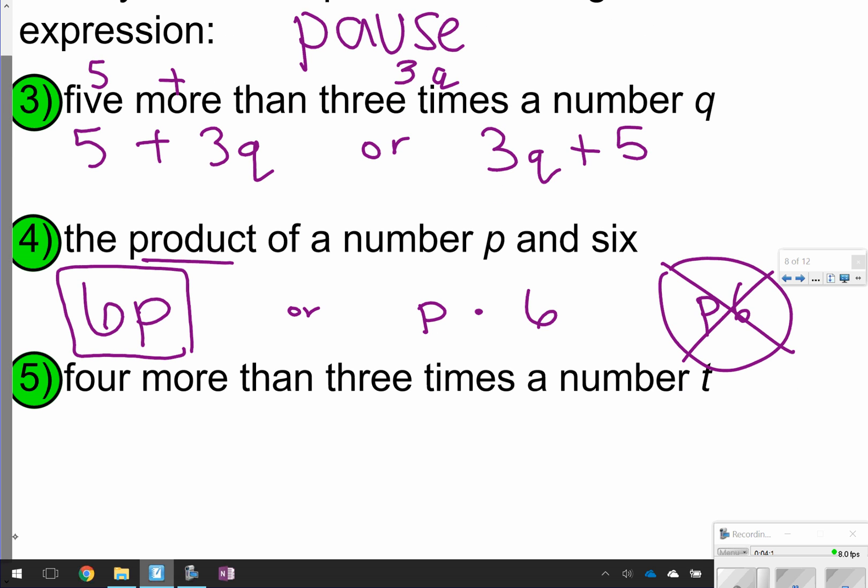Number 5 says 4 more than 3 times the number t. Again, kind of like number 3, 4 more than 3 times the number t would be 4 plus 3t, or you could do 3t plus 4.